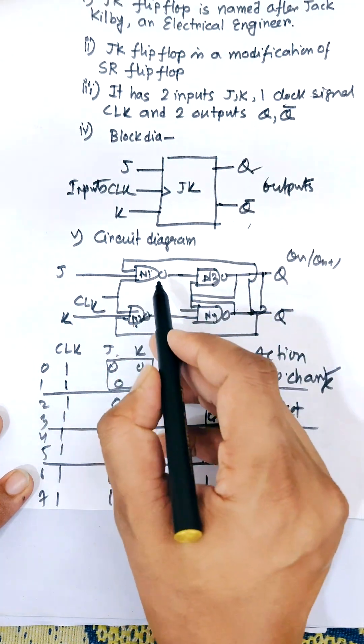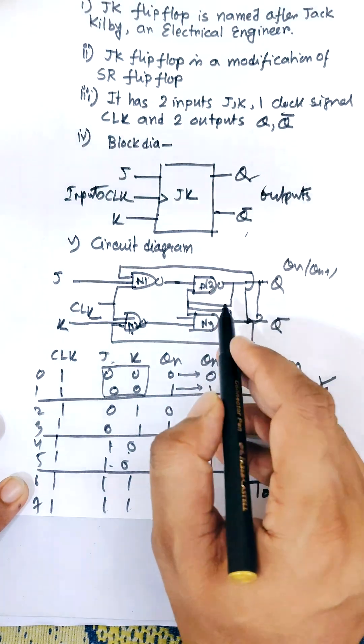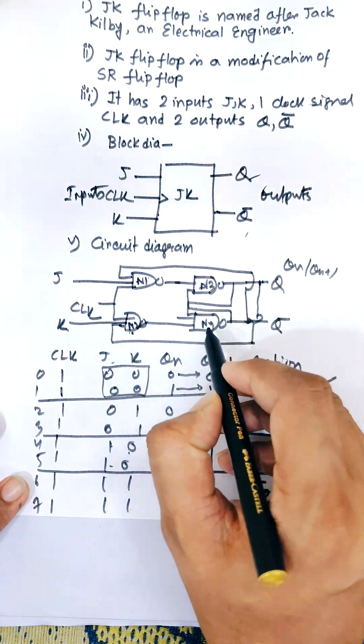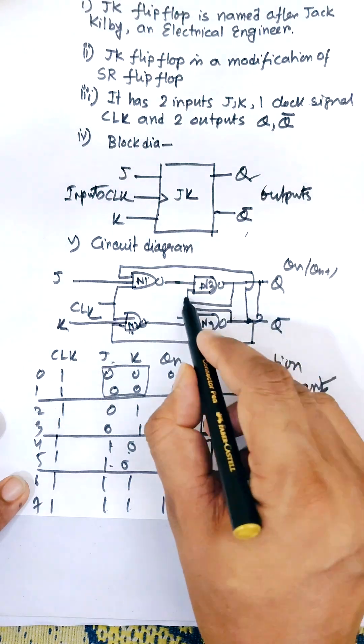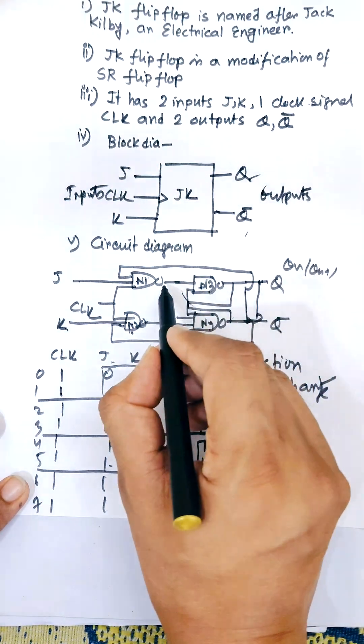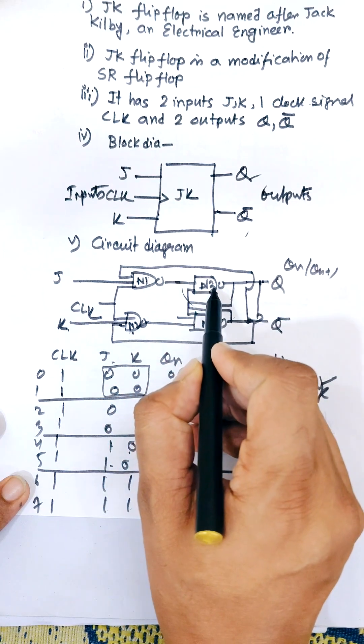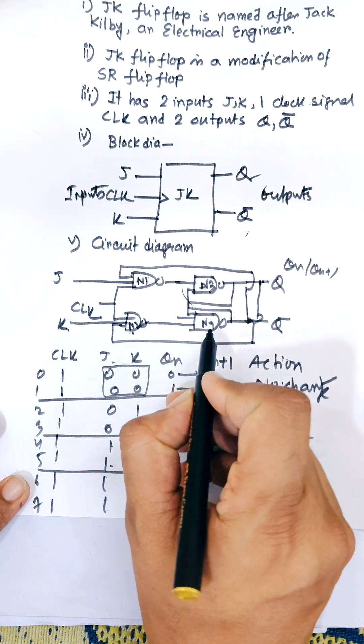Now there are four NAND gates N1, N2, N3, N4. First of all you draw N3 and N4. The output of N3 is feedback to N4. Output of N4 is feedback to N3. Now next, the output of N1 goes to the input of N3. Output of N2 goes to the input of N4.